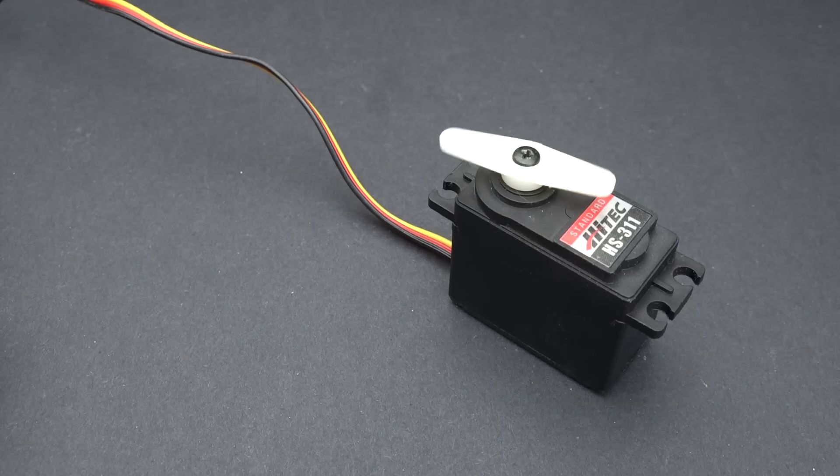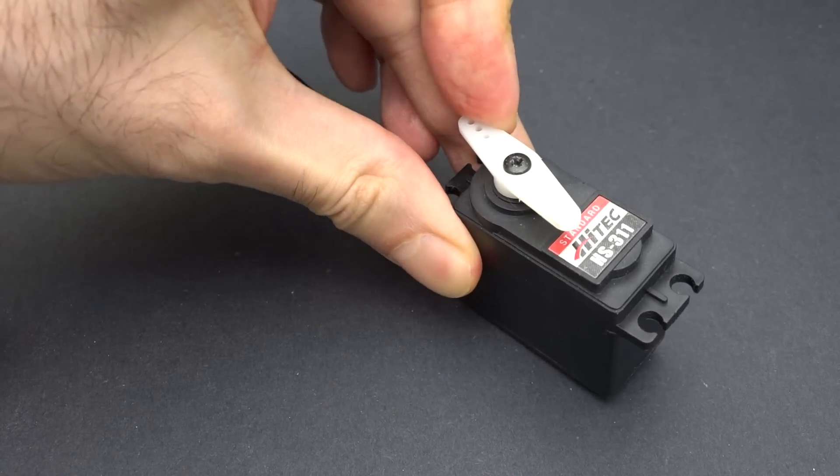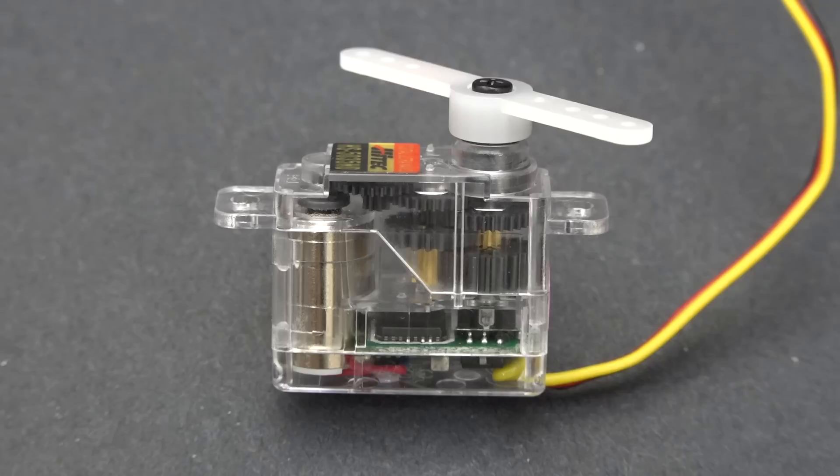A servo motor is a motor with a closed loop control system. This means that you do have a way to control the speed and position regardless of the load. Here's how they work.